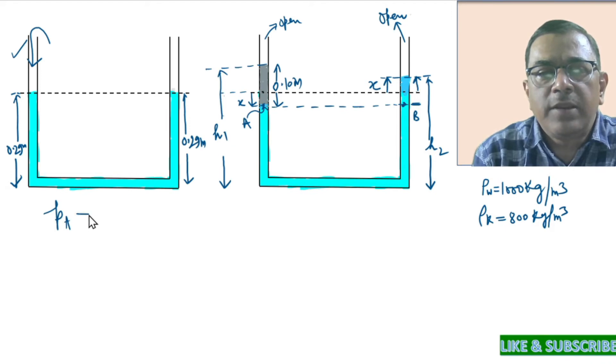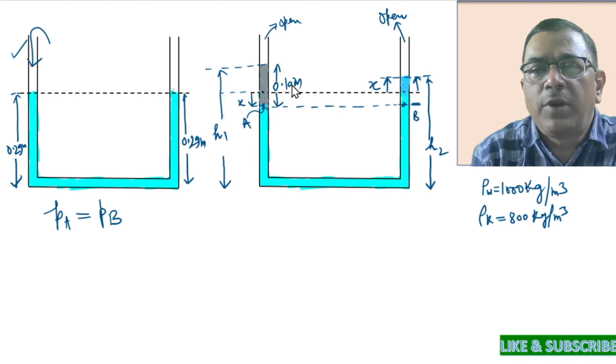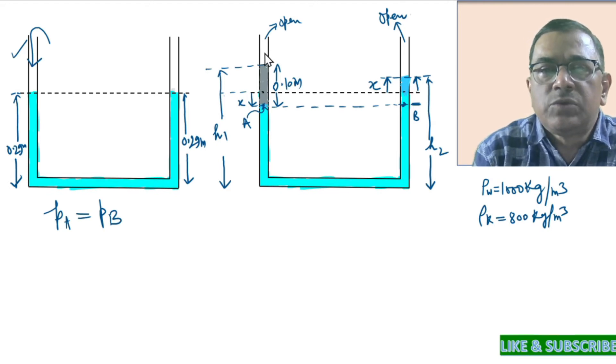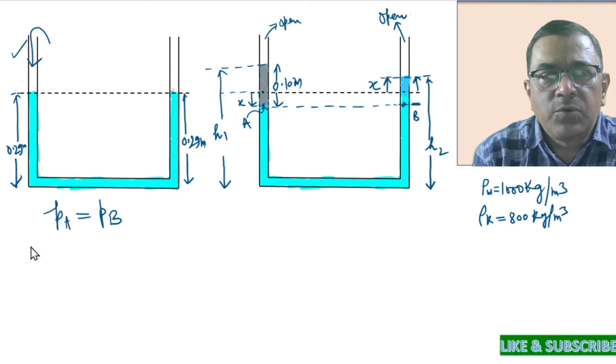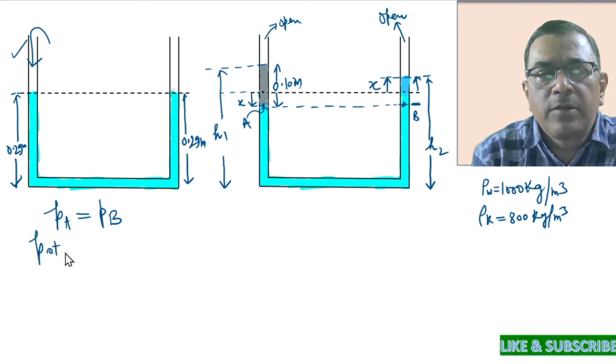Now, pressure at point A should be same as pressure at point B. And above point A, we have the kerosene of height 0.1 meters. So the pressure at A, the total pressure at A should be P0 plus H of kerosene times density of kerosene times G.